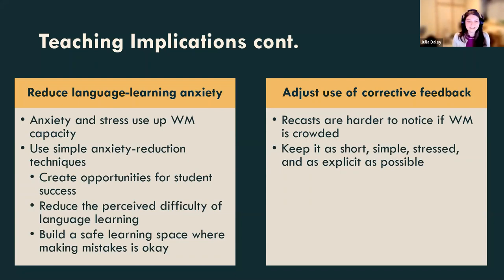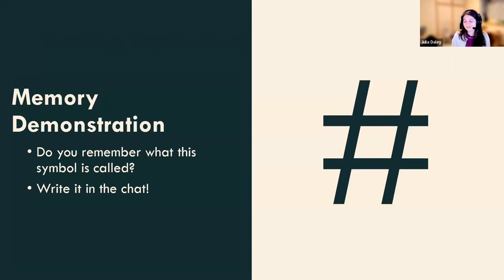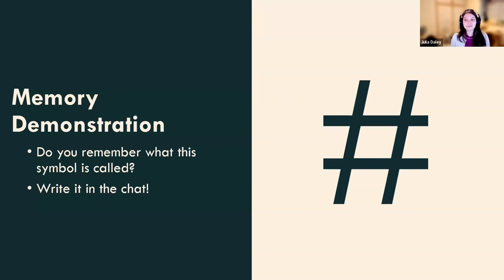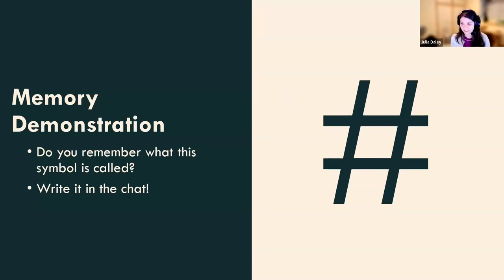Okay — open up the chat again. What is this symbol called? Do you remember? Did it make it to your long-term memory? Participants responded with 'octothorpe' — that was successful long-term memory formation, because I haven't talked about the octothorpe for a good 20 minutes. The only way you could have remembered that is if it made it successfully from your working memory to your long-term memory. Of course, if I asked you this in a week, you might not remember anymore because it might not have been a very strong connection. This is to remind you that you can't just teach a student something once — they might remember it up to the test, but they'll likely forget it if you never revisit it.